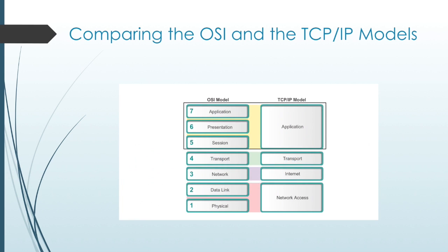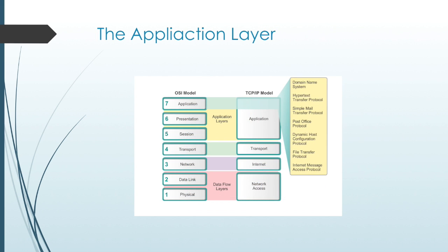The application layer is the top layer of both the OSI and TCP/IP models. The TCP/IP application layer includes a number of protocols that provide specific functionality to a variety of end-user applications. The functionality of the TCP/IP application layer protocols fits roughly into the framework of the top three layers of the OSI model: application, presentation, and session layers. The application layer is closest to the end-user. It is the layer that provides the interface between the applications we use to communicate and the underlying network over which your messages are transmitted.